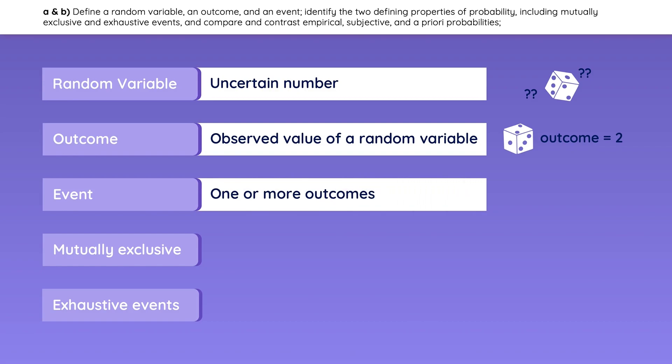An event is one or more outcomes. For example, rolling a 3 is an event, and rolling an even number is an event as well.